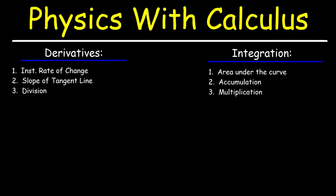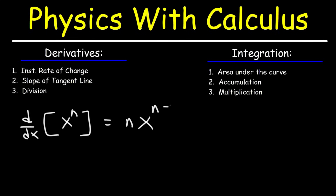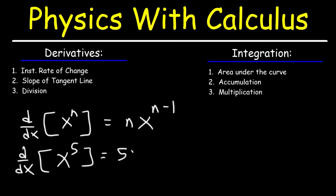To review: if you want to find the derivative of x to the n with respect to x, using the power rule, it's equal to n times x raised to the n minus 1. For instance, the derivative of x to the 5th power is 5x to the 5 minus 1, which is 5x to the 4th.